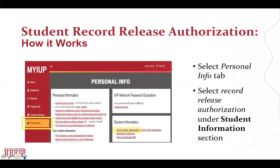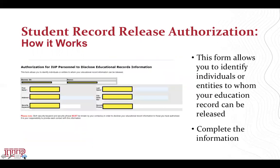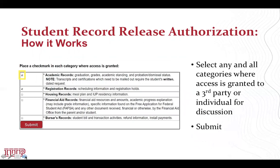The authorization process is simple to set up. First, the student accesses the personal information section in their myIUP account, under Student Information — Record Release Authorization. The student then identifies the person by name and address that they wish to give access. The student establishes a keyword and security phrase — for example, the security phrase could be 'my favorite day of the week' and the keyword could be 'Friday.' The student then shares this information with the person they wish to give access. Finally, the student selects any or all parts of their academic record where access is granted to a third party for discussion.